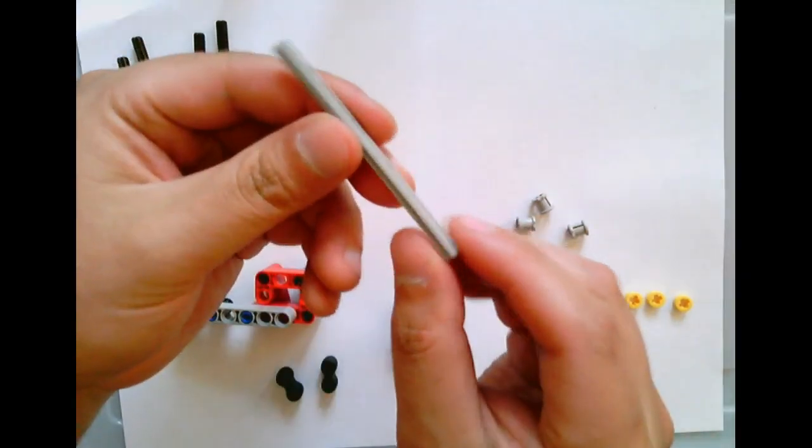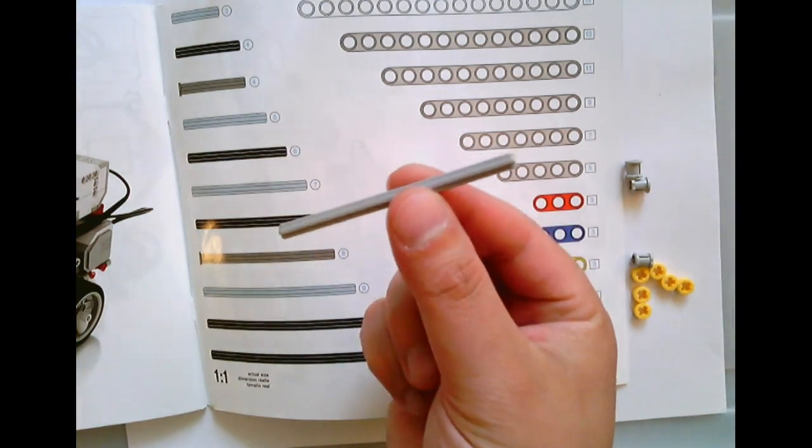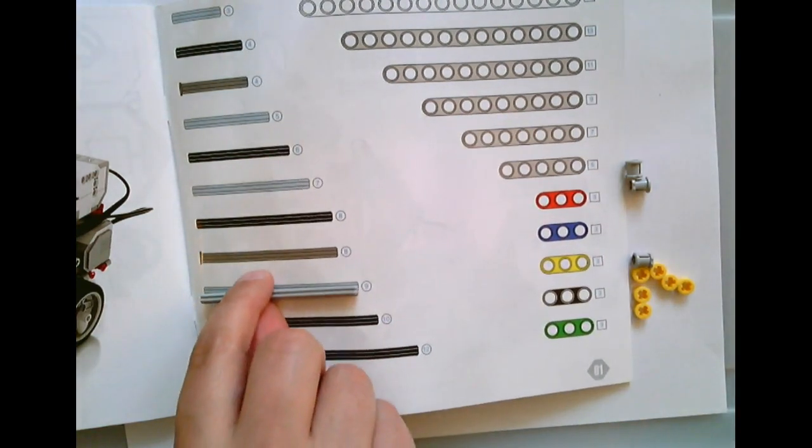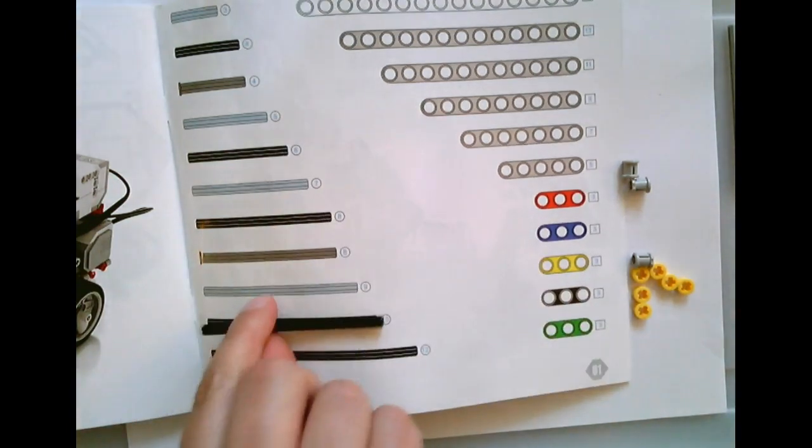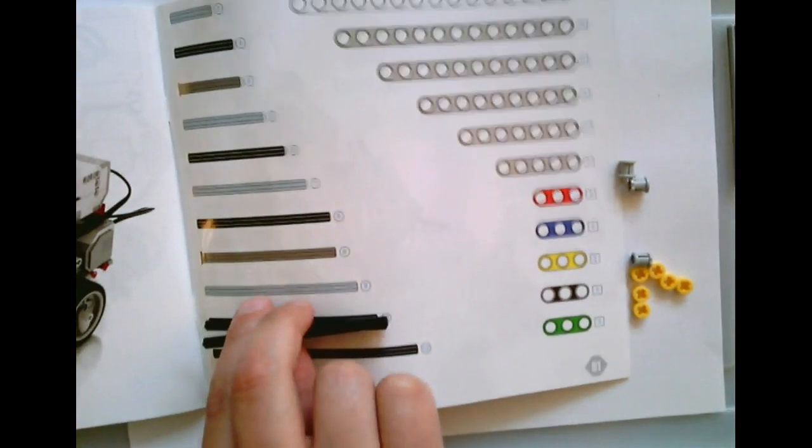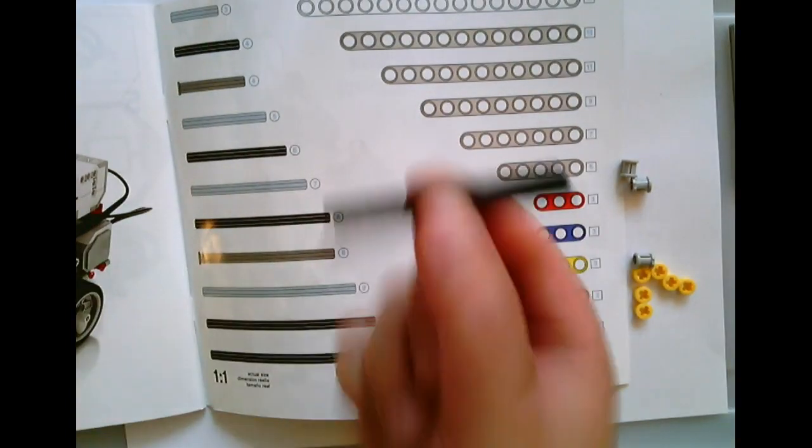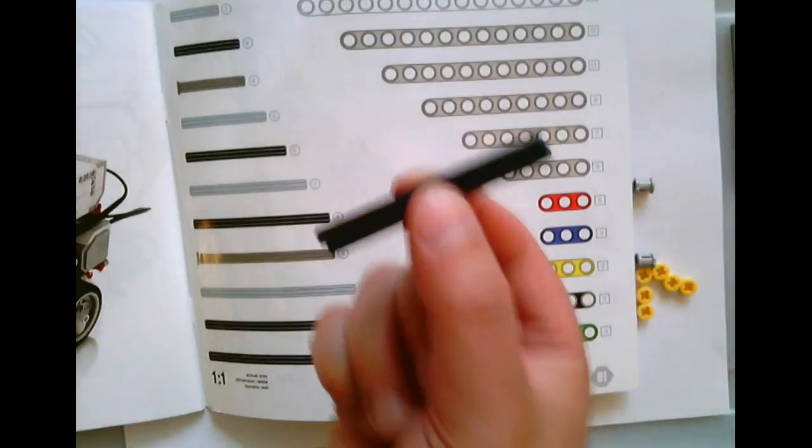Get an axle like this. For your axles, you're going to need a size 9, size 10, you're going to need two size 10s, and you're going to need two size 8s, the black ones.